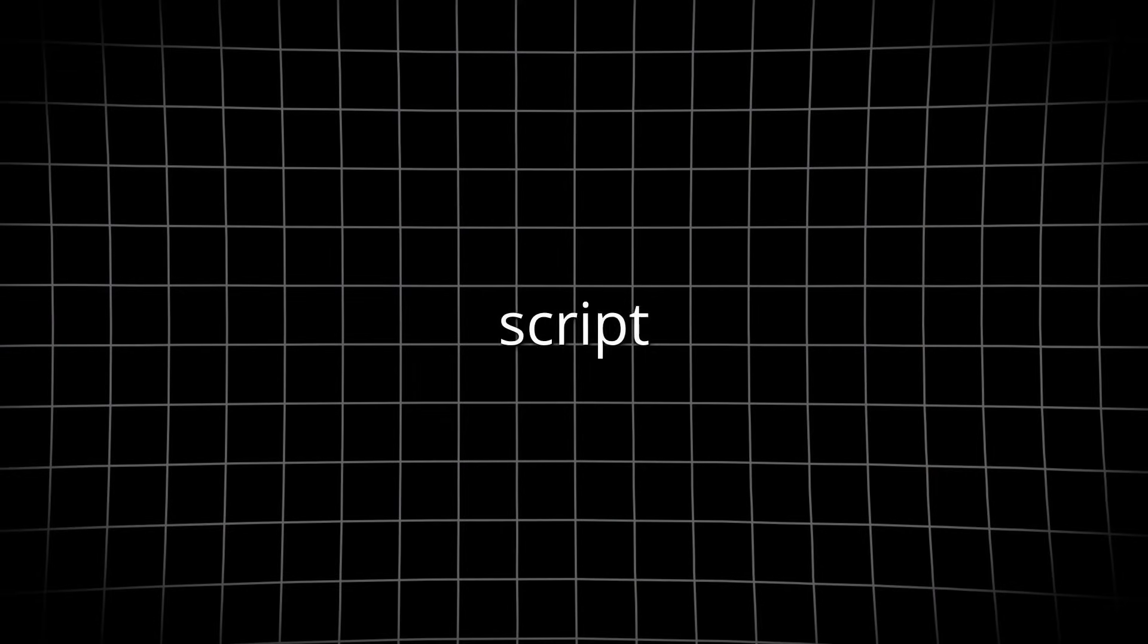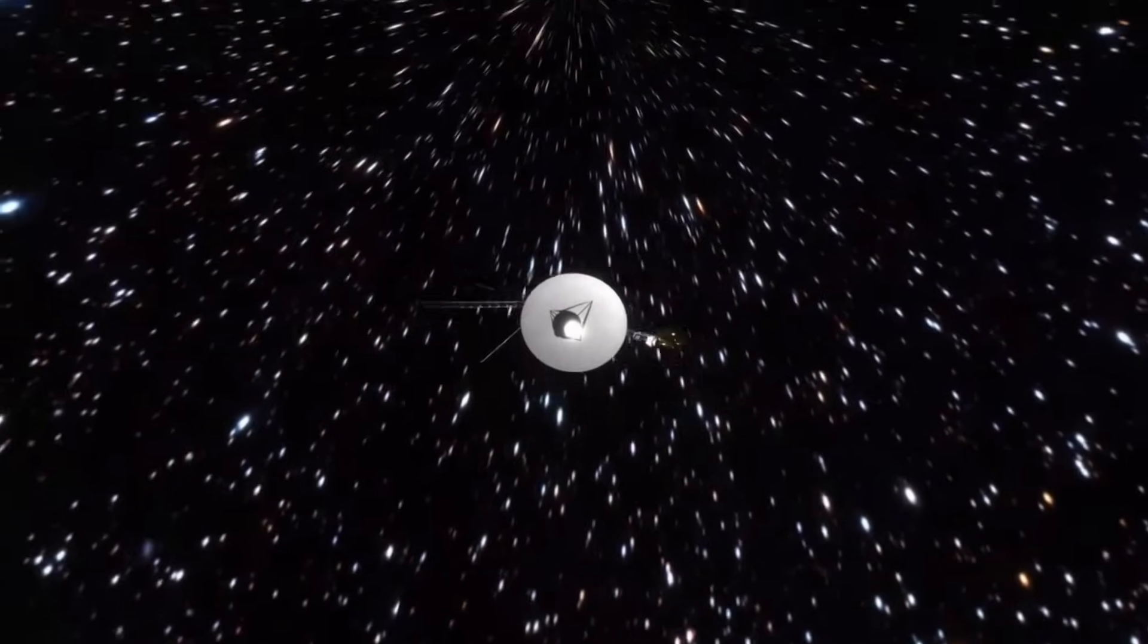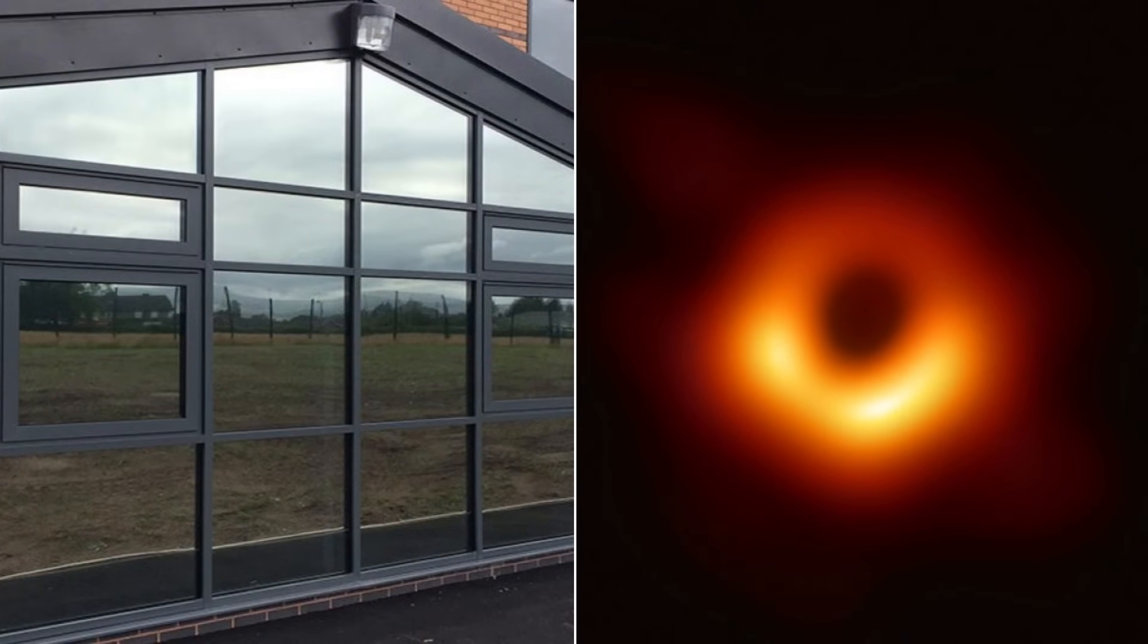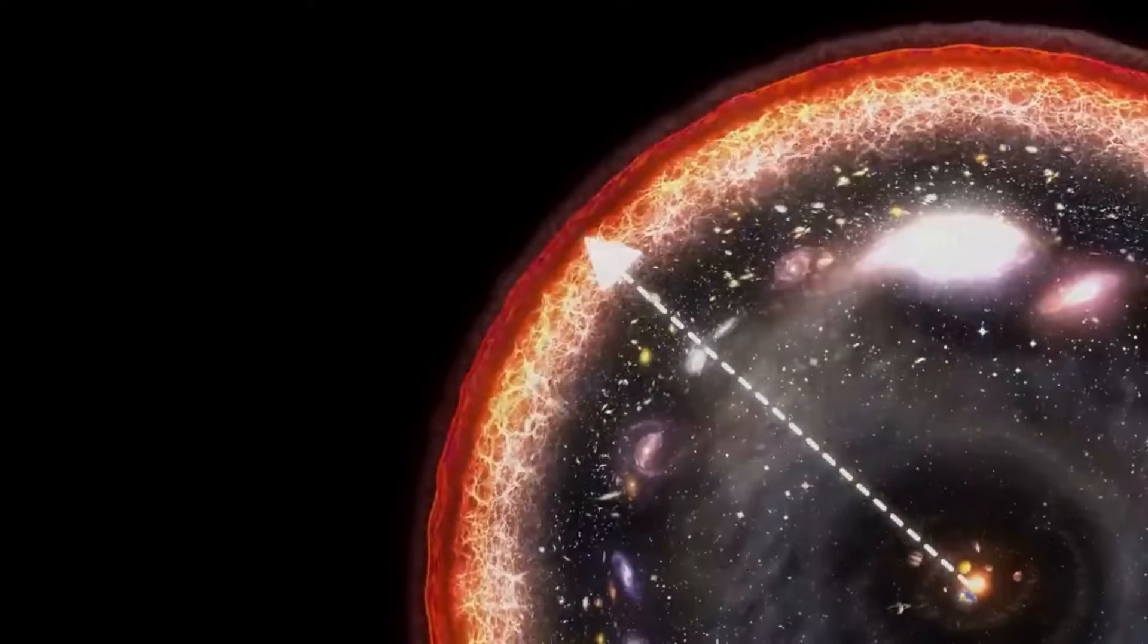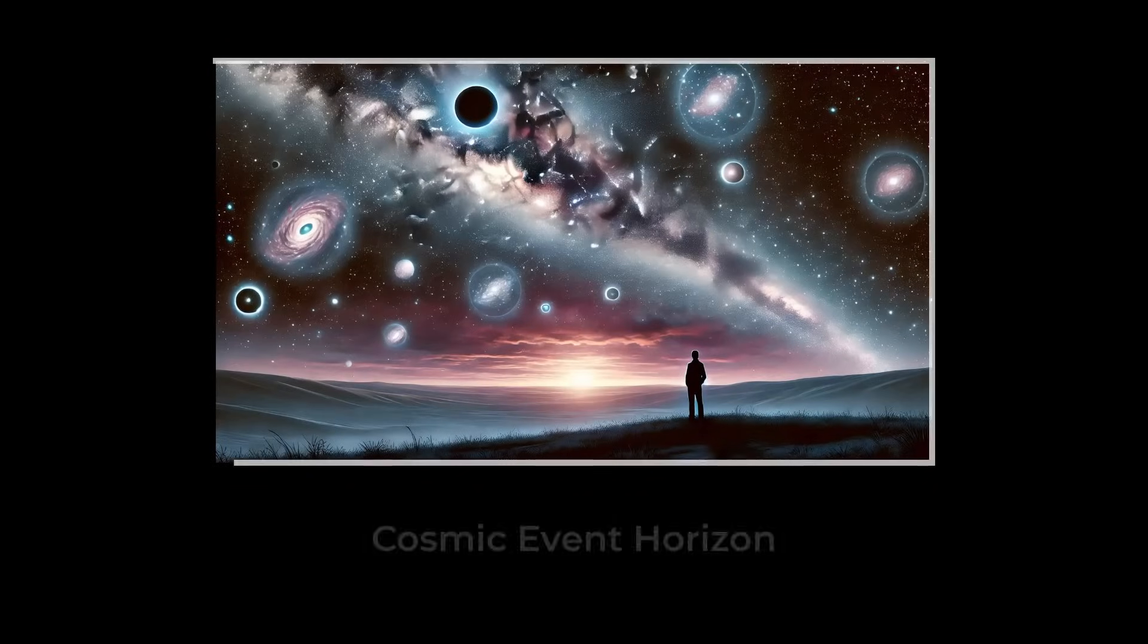Now flip the script. Instead of thinking about what happens when something falls into a black hole, imagine what it would feel like to exist on the inside and looking out. The event horizon isn't just a wall, it's a one-way mirror. From inside, you can see everything within your cosmic bubble, but nothing beyond. That's your universe, sealed off by a boundary you can't cross.